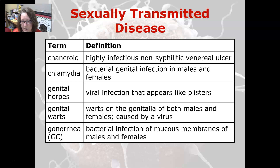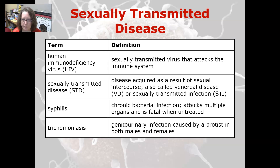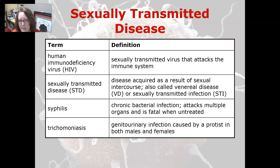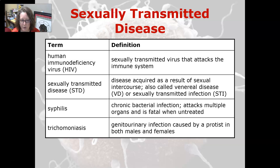Gonorrhea, or GC, is a bacterial infection of the mucous membranes of males and females. The human immunodeficiency virus is a sexually transmitted virus that attacks the immune system. A sexually transmitted disease is a disease acquired as a result of sexual intercourse, also called venereal disease or sexually transmitted infection. Syphilis is a chronic bacterial infection; it attacks multiple organs and is fatal when untreated.